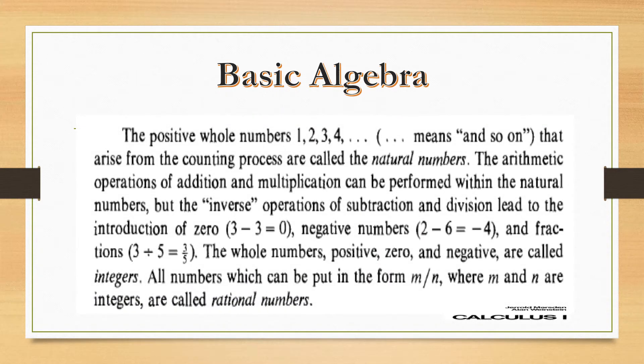You are already aware of positive whole numbers, which are known as 1, 2, 3, and so on. These are the positive whole numbers that arise from the counting process, and they are also called the natural numbers.